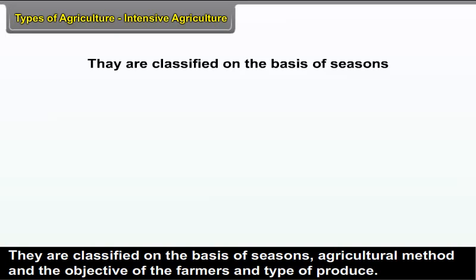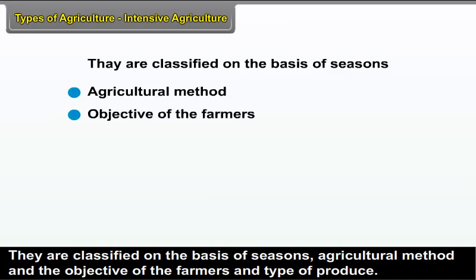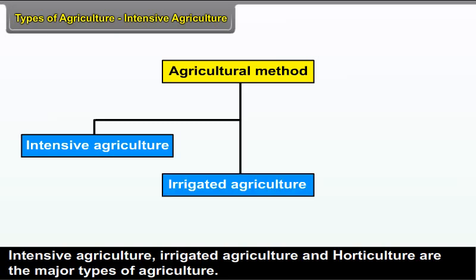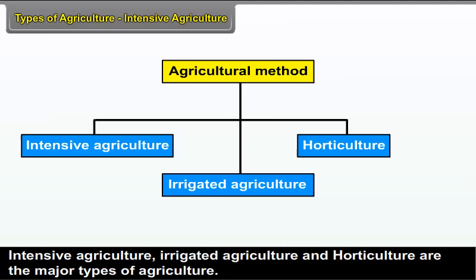Types of agriculture: There are different types of agriculture. They are classified on the basis of seasons, agricultural method, the objective of the farmers, and type of produce. Intensive agriculture, irrigated agriculture, and horticulture are the major types of agriculture.